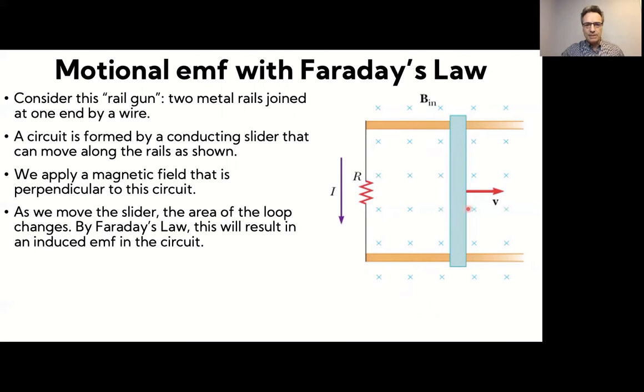And so now consider what's happening as we move. We pull out this slider here to the right with a velocity V. As that happens, this area here, the area enclosed by this loop is increasing. And so by Faraday's law, that will result in an induced EMF in the circuit. Let's calculate that now.